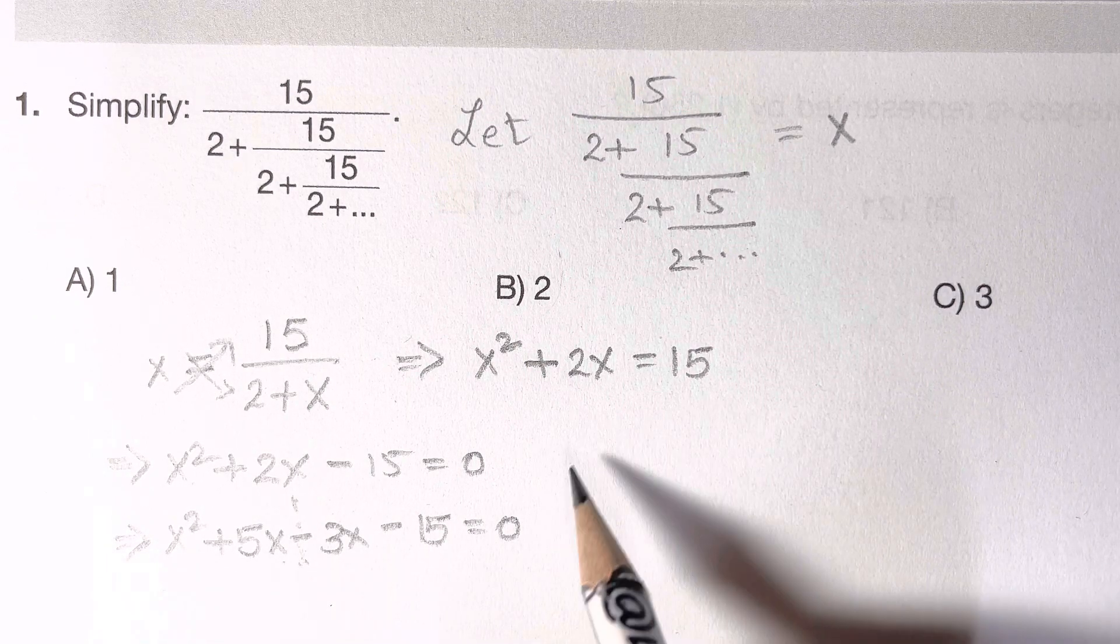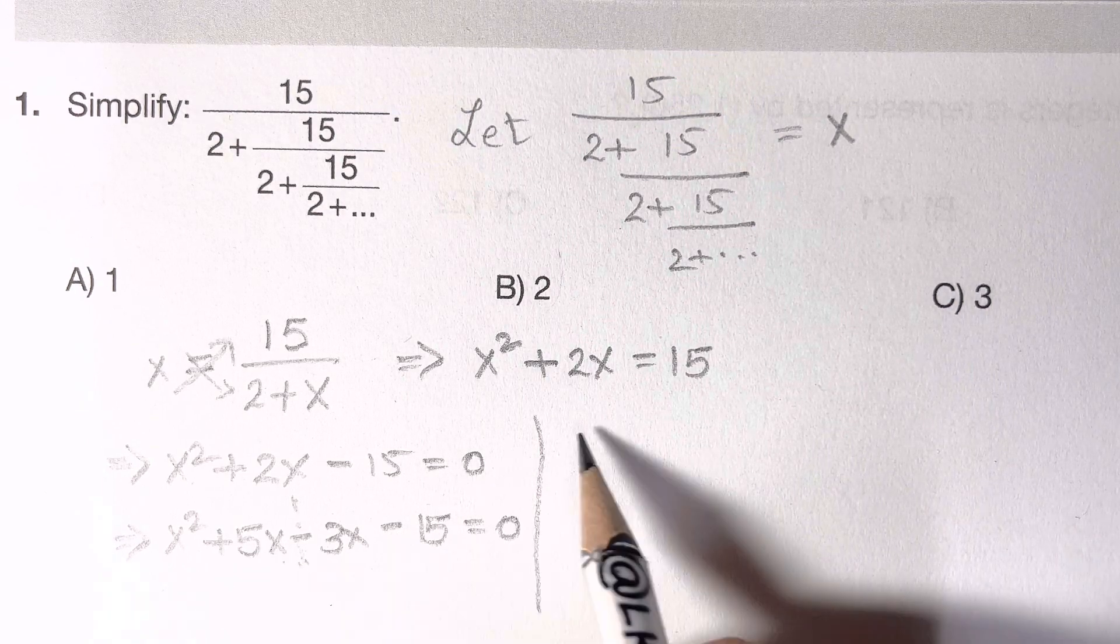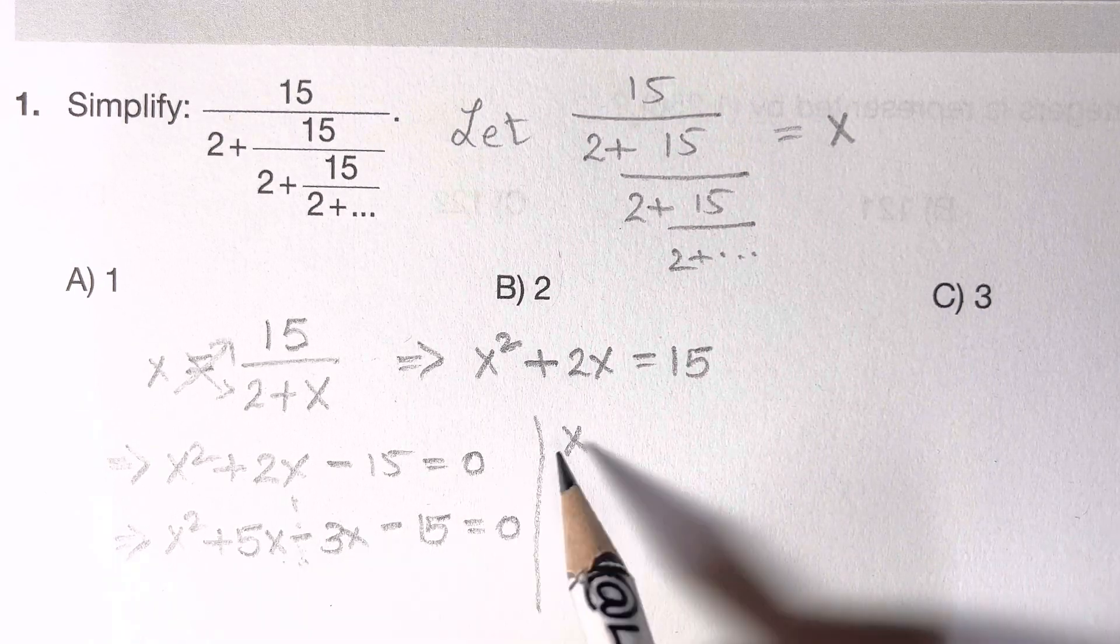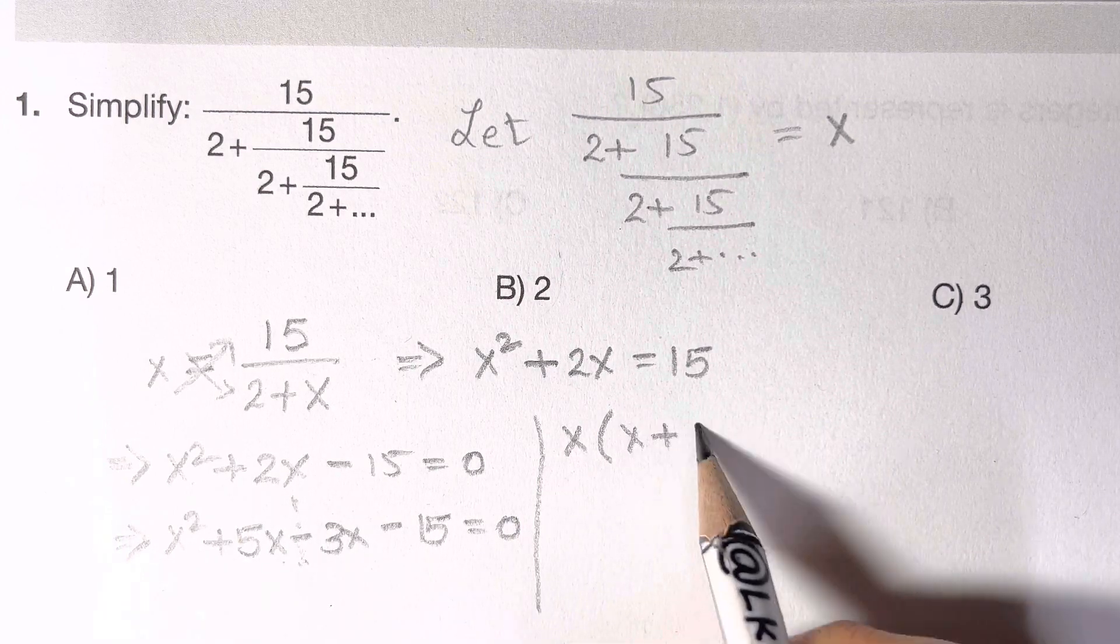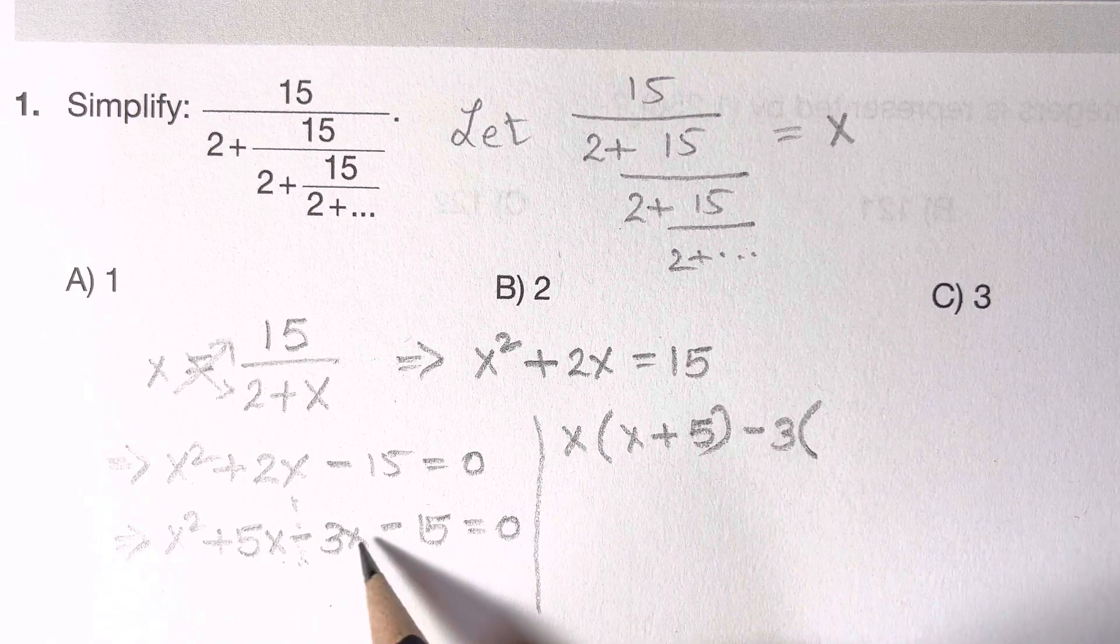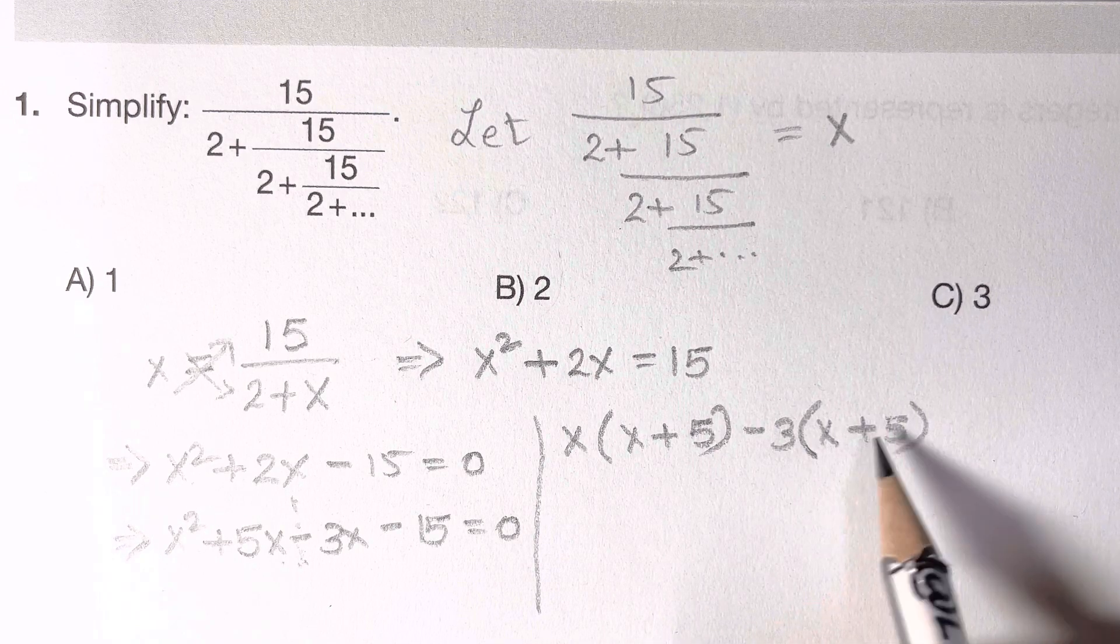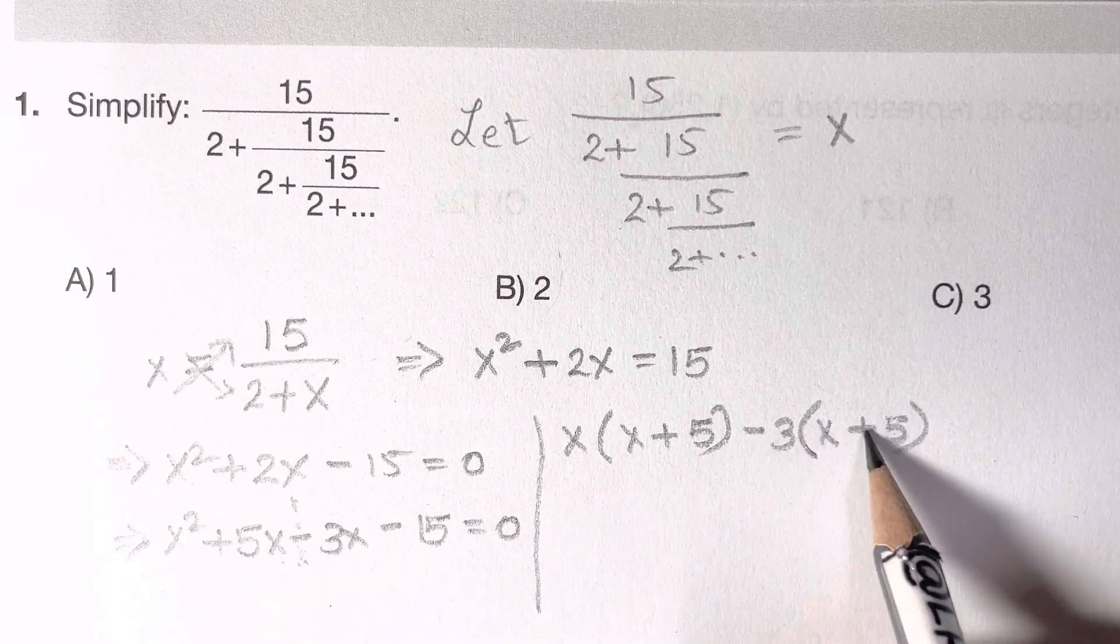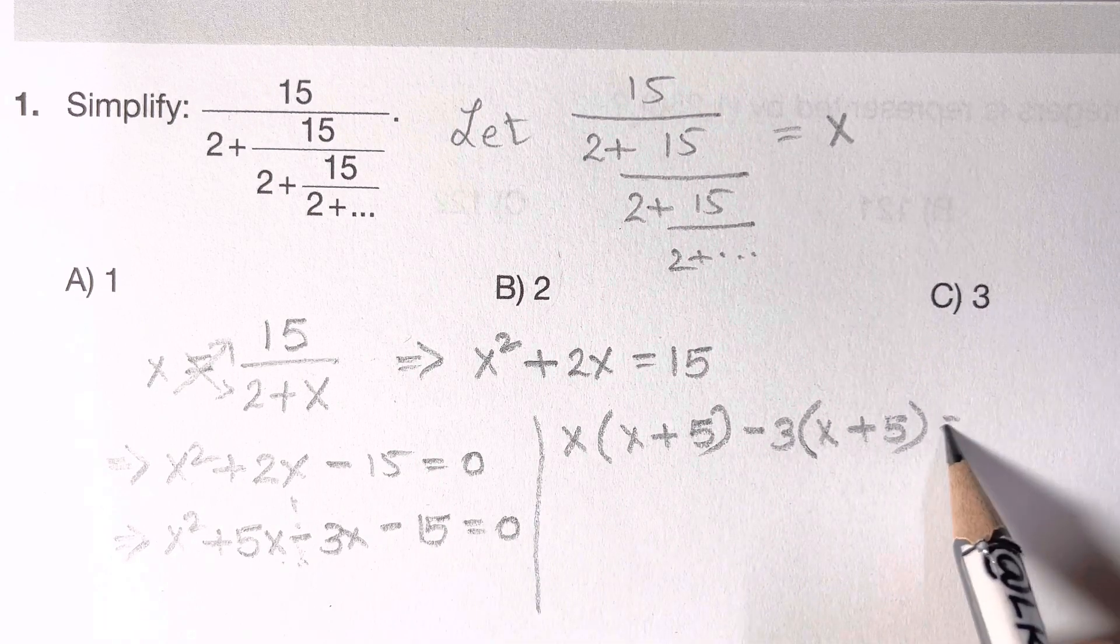We need to find x is common, so we're going to take x out and we have x plus 5. From here we're going to take minus 3 out and we're left with x plus 5, because minus into plus should give you minus 15 back. That's equal to 0.